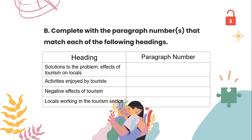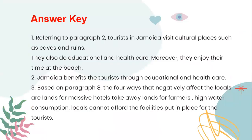The answers for the questions in part A: referring to paragraph two, tourists in Jamaica visit cultural places such as caves and ruins, they also benefit from educational and health care services, and moreover they enjoy their time at the beach. Number two: Jamaica benefits tourists through educational and health care services. Number three: based on paragraph eight, the four ways that negatively affect the locals are — land for massive hotels takes away land from farmers, high water consumption, locals cannot afford the facilities put in place for tourists.